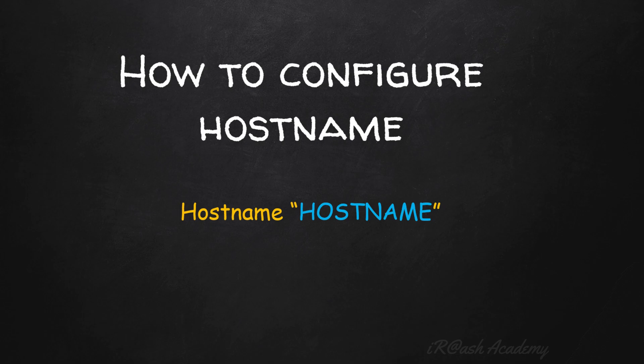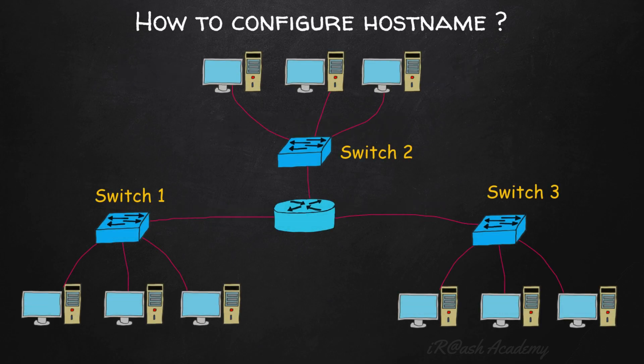Now let's see how to configure the hostname. We can use the 'hostname' command to configure the hostname in a Cisco device. It doesn't matter whether it is a network switch, router, firewall, WLC, or access point - any Cisco device running IOS operating system can use this same 'hostname' command. In the network diagram you can see three switches connected to one router: Switch1, Switch2, and Switch3.